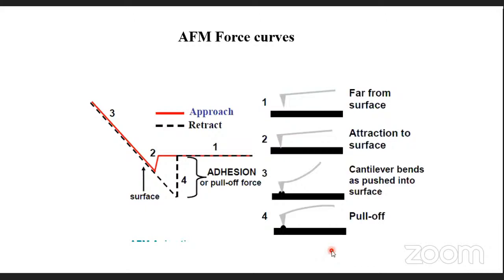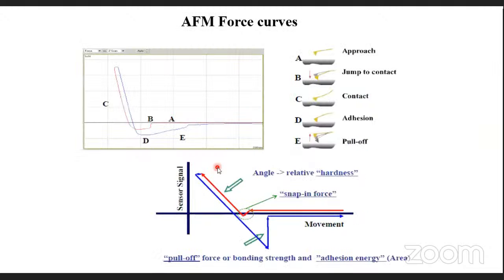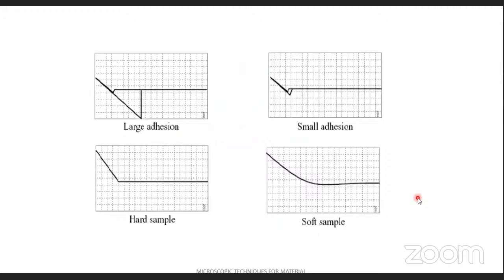The force-distance graph shows far from surface, attraction to surface, contact, pushing inside, and pulling off. You get adhesion force — how much adhesion your sample has — and pull-off force. The graph shape changes depending on the sample: large adhesion gives a deep pull-off curve, small adhesion gives a shallow one. Soft samples show one type of curve while hard samples show another. This is the snapping force and adhesion energy information from your sample.